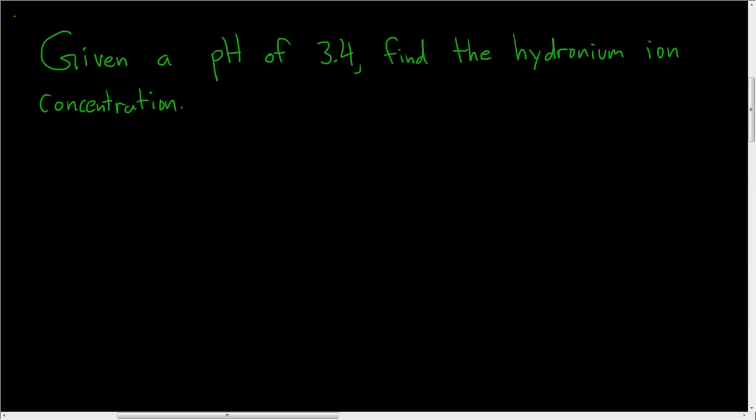Given a pH of 3.4, find the hydronium ion concentration. There's a formula that relates the pH and the hydronium ion concentration. pH is equal to the negative log of the hydronium ion concentration.